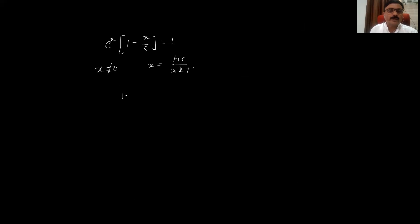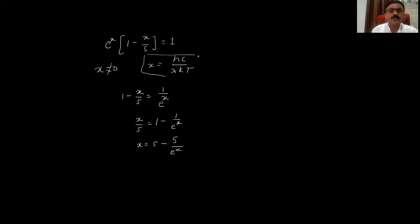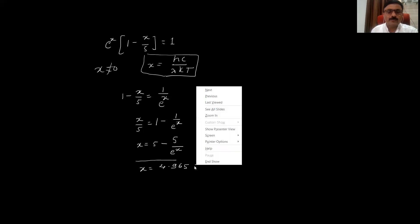Rearranging: 1 − x/5 = e^(−x), so x/5 = 1 − e^(−x), giving x = 5 − 5e^(−x). We know x = hc/λkT. This equation is satisfied for x = 4.965. You can verify this value.